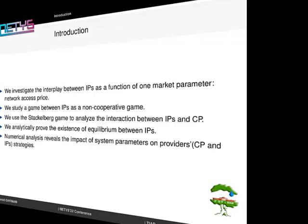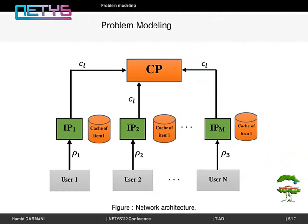Problem modeling. This figure shows the monetary flow among different entities. We consider a network with several users, an infrastructure provider, and one content provider. Each infrastructure provider g chooses a price rho_g, and the content provider chooses caching price C.